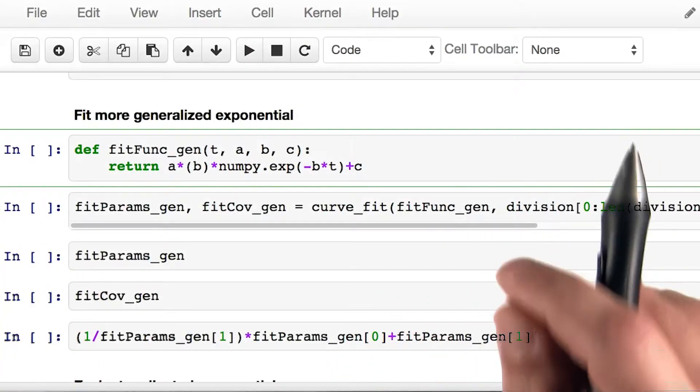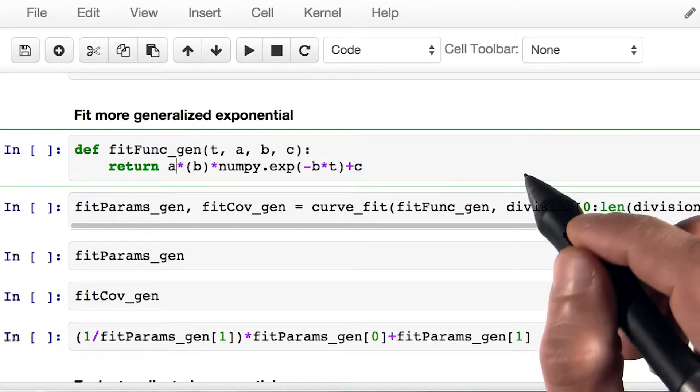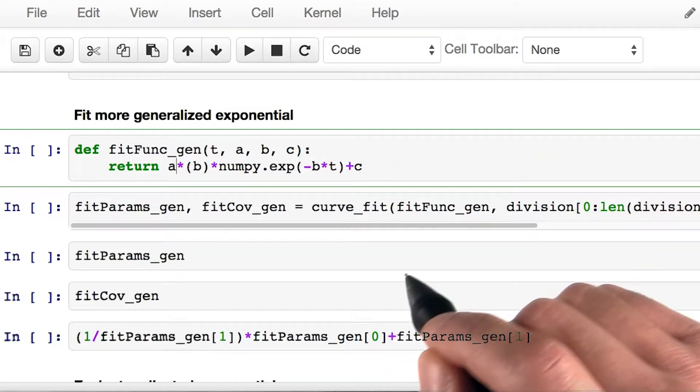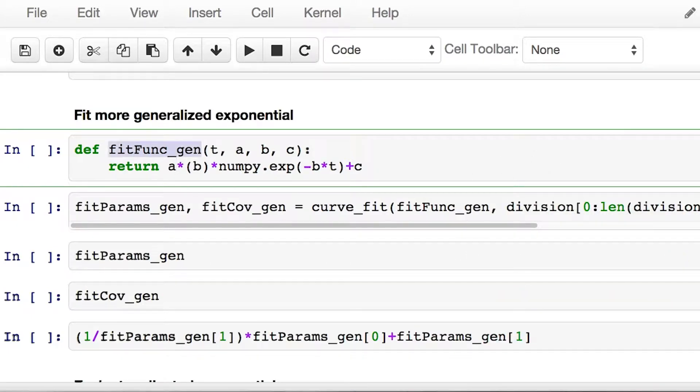We're going to use precisely the same method in ipython notebook to perform a fit. Specifically, we're again going to use scipy's curve fit in order to find the best parameters. This time, however, fit func is going to have a couple of extra parameters. So in addition to just having the constant b, now we're reasoning about the constant a and the offset c.